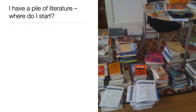So once you have all your literature — a pile of books and papers — where do you start? Here it's helpful to consider that there are actually different kinds of literature. On the most basic level there are encyclopedias. They offer definitions of concepts. If you do not know what critical regionalism is, you may look it up in an encyclopedia and get a definition.